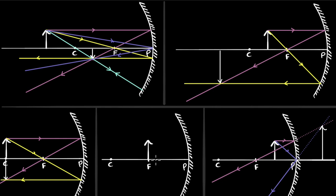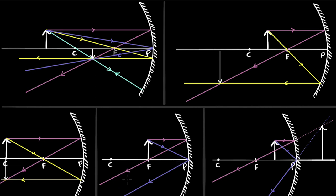Finally, let's come to the case where the object is at F. The first ray I'll draw parallel to the principal axis goes through the focus. The second ray I'll draw at the pole, making sure the reflected ray has the same angle. This time what I find is that the two rays are parallel to each other — they are neither going to meet here, and even if I extend them behind, they will not meet, which means this time I will get no image at all. So when the object is at F, you get no image.